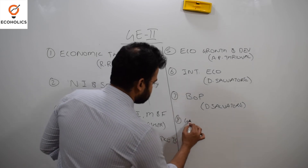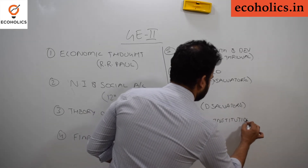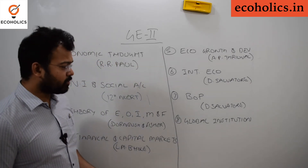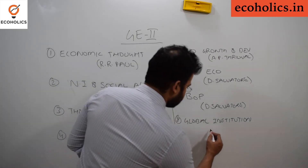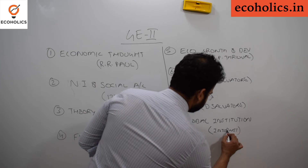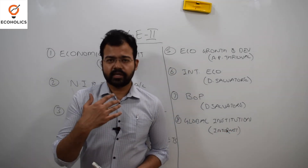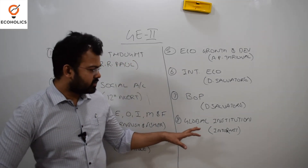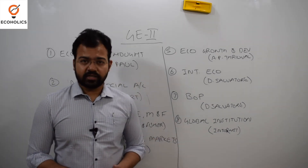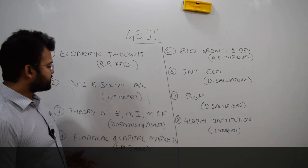The eighth topic is Global Institutions — like the World Bank, IMF, WTO, and other UN bodies related to economics. For this, the best source is the internet — specifically the official websites of the World Bank, IMF, etc. Do not refer to any unauthenticated sources. If you are not able to find any topic, you can send a WhatsApp message and the instructor will help you.